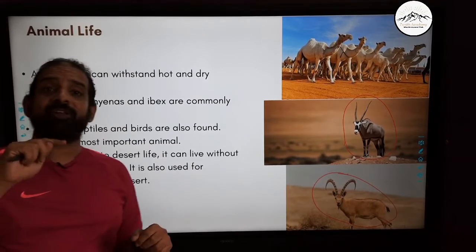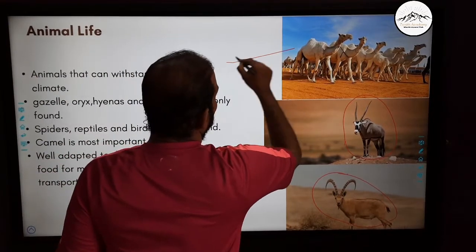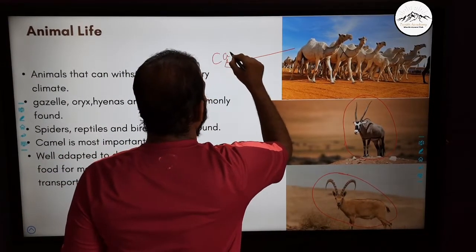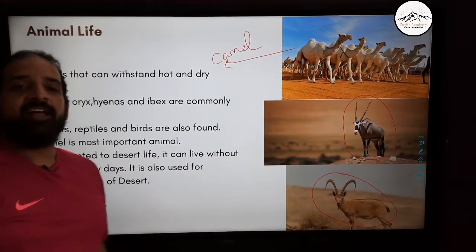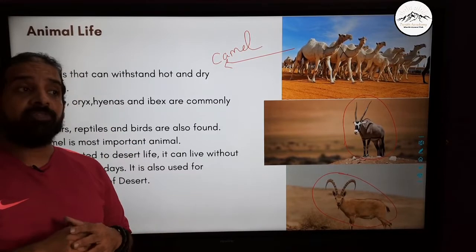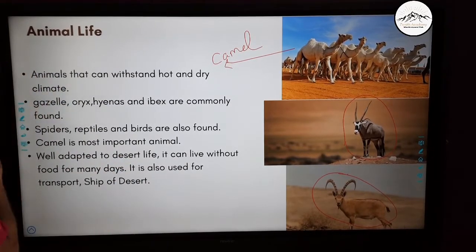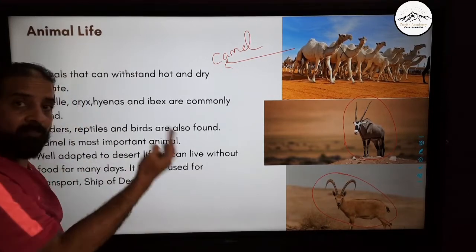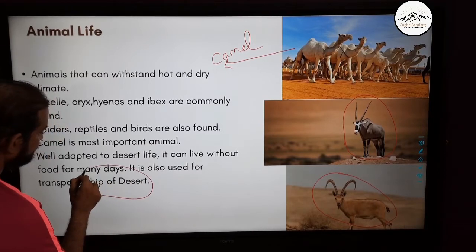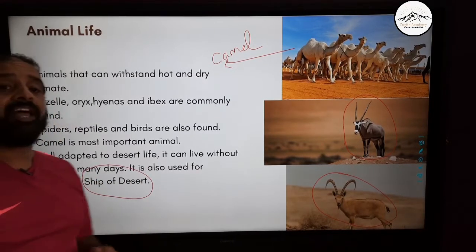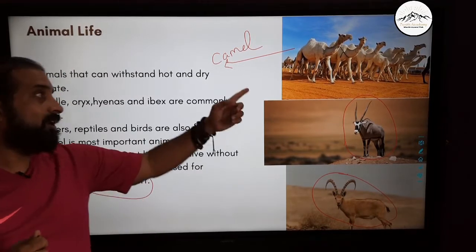The most important animal of any desert — and also of Saudi Arabia — is the camel. The camel can withstand very high temperatures. They can go for a long time without drinking water and are used for transporting goods as well as human beings from one place to another. Hence, they are called the ship of the desert.